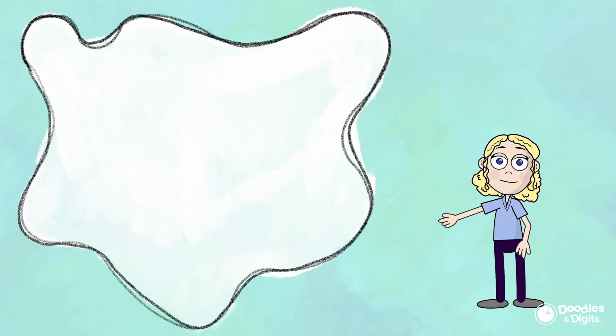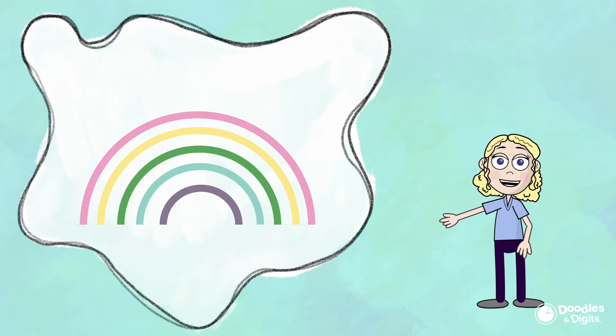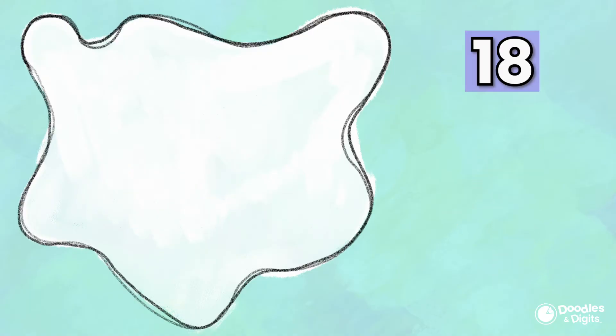One way that you can find factor pairs or factors of a number is using factor rainbows. We call them factor rainbows because the line you're going to draw between the two pairs of factors kind of looks like a rainbow. Let's make a factor rainbow for this number here. Let's do the number 18.